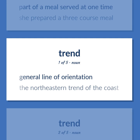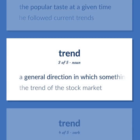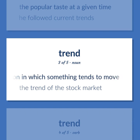General line of orientation. The northeastern trend of the coast. The popular taste at a given time. He followed current trends. A general direction in which something tends to move. The trend of the stock market.